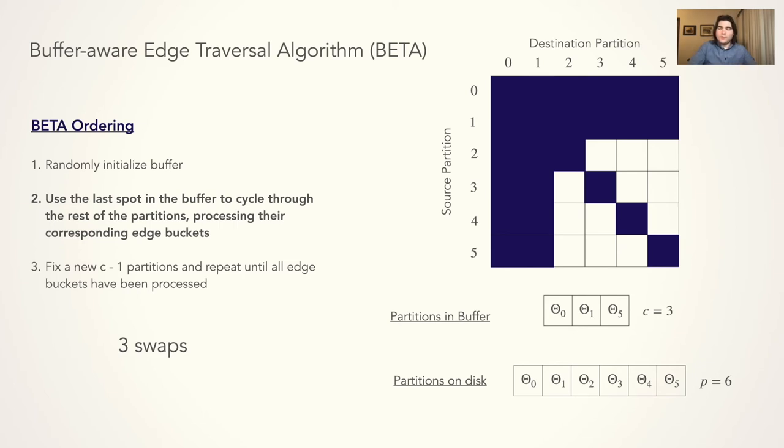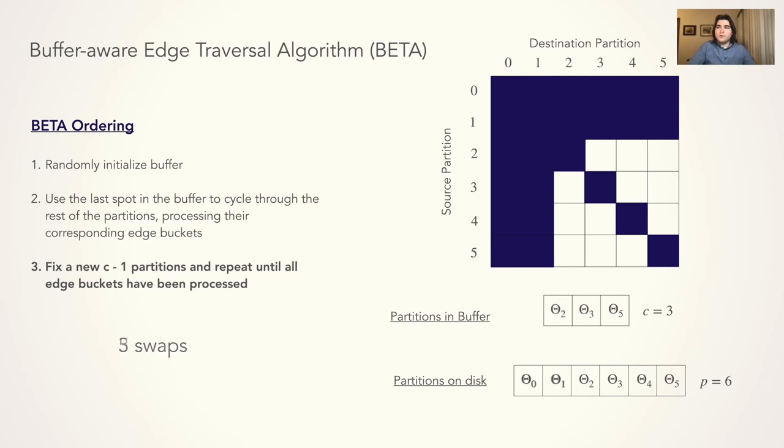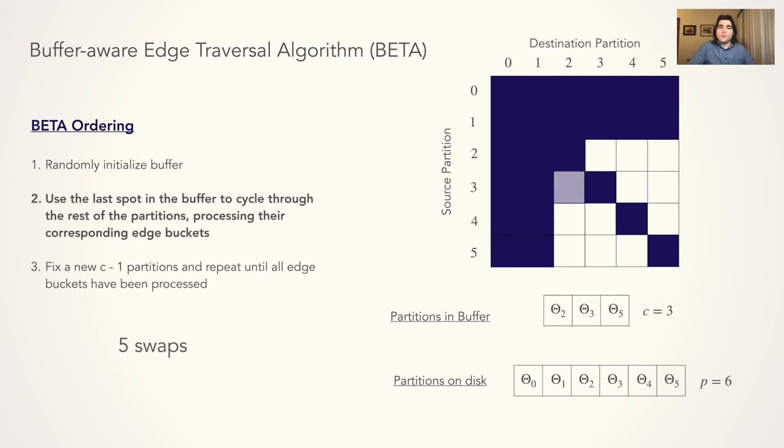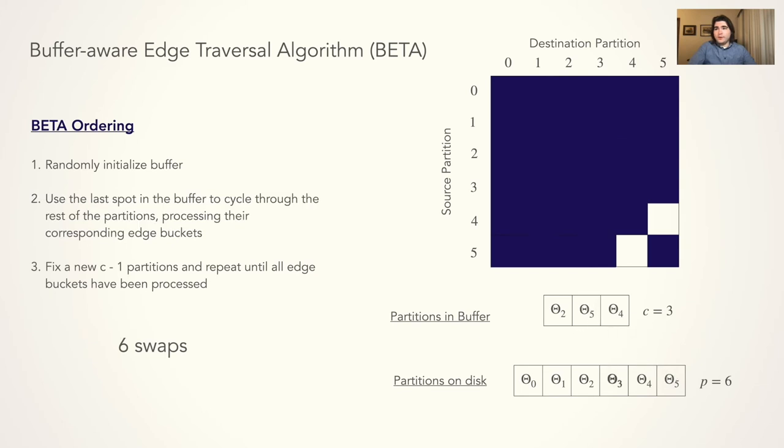Now we can swap out these partitions, bring in c-1 new partitions, and repeat the process until we have processed all edge buckets this epoch. At the end of this, we get a total of 7 swaps, which is close to the lower bound, the 6-swap lower bound.